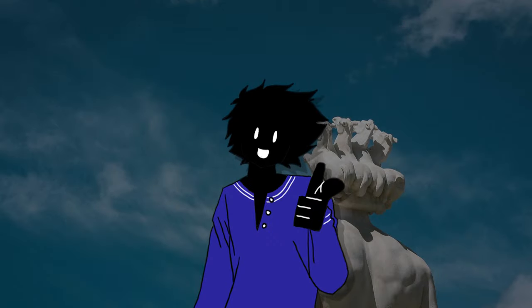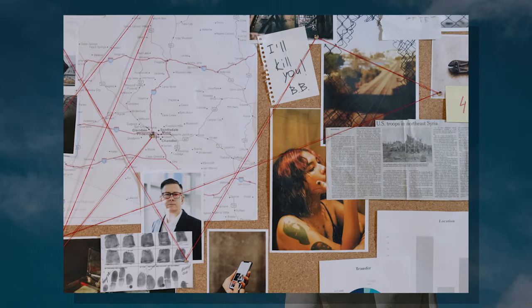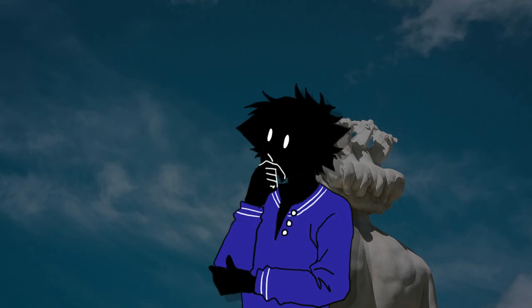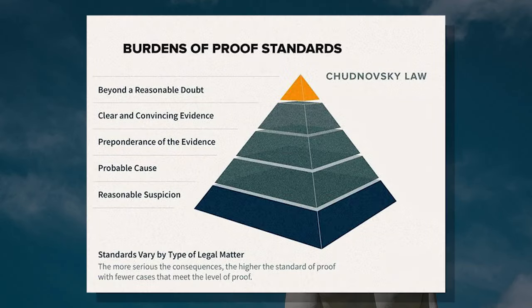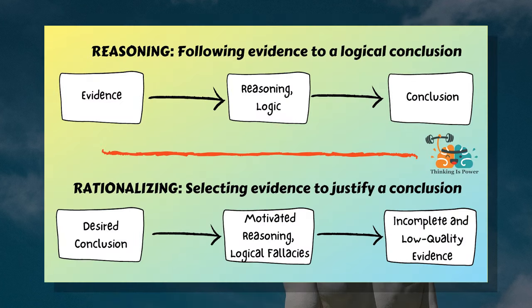If your explanation for the cause of an event requires more and more complex working parts to prove, the more you add to the hypothesis lowers the chance of the conclusion being correct. That's because you would require a higher standard of evidence for each part you add, and you would have to make sure they all logically follow to the conclusion.